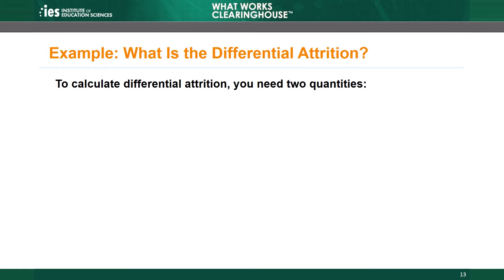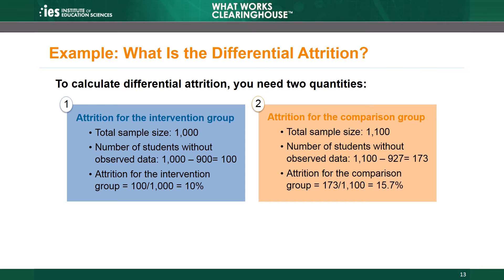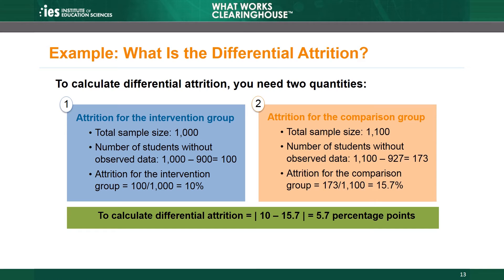The WWC takes a similar approach for differential attrition but conducts the calculation for each group. For the intervention group, we started with 1,000 randomly assigned students; the researchers observed data for only 900 students, so they didn't observe data for 100 students out of 1,000. The attrition rate for the intervention group is 10%. For the comparison group, 173 of the 1,100 randomly assigned students lack observed data, resulting in a 15.7% attrition rate. Taking the absolute value of the difference between the two rates gives us 5.7% as our differential attrition rate.